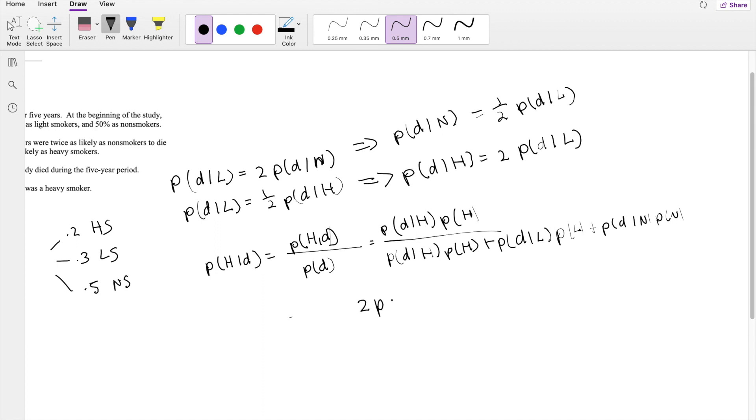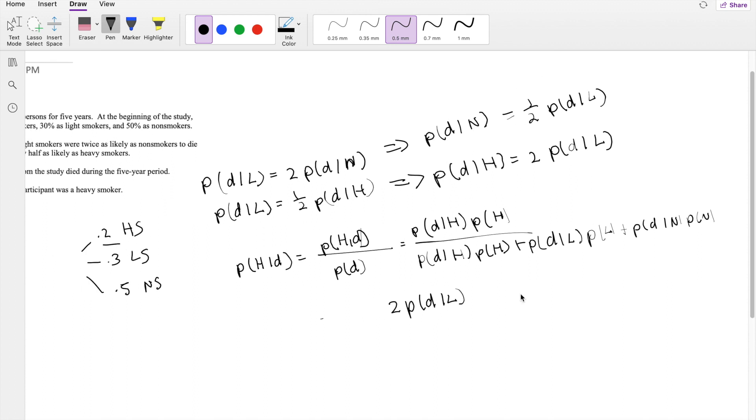I'm going to put two times the probability that they died given they were low risk times the probability of H, which is here, 0.2, divided by... So same thing here, two times P(D given L) times 0.2, plus D given L, that's already in terms of D and L, times the probability of L, that's 0.3.